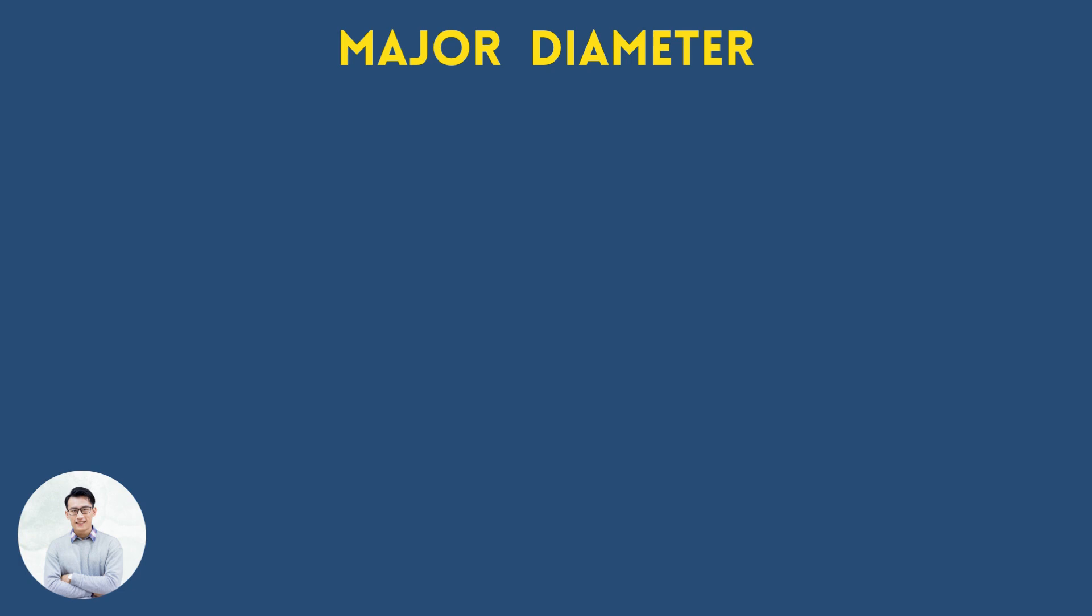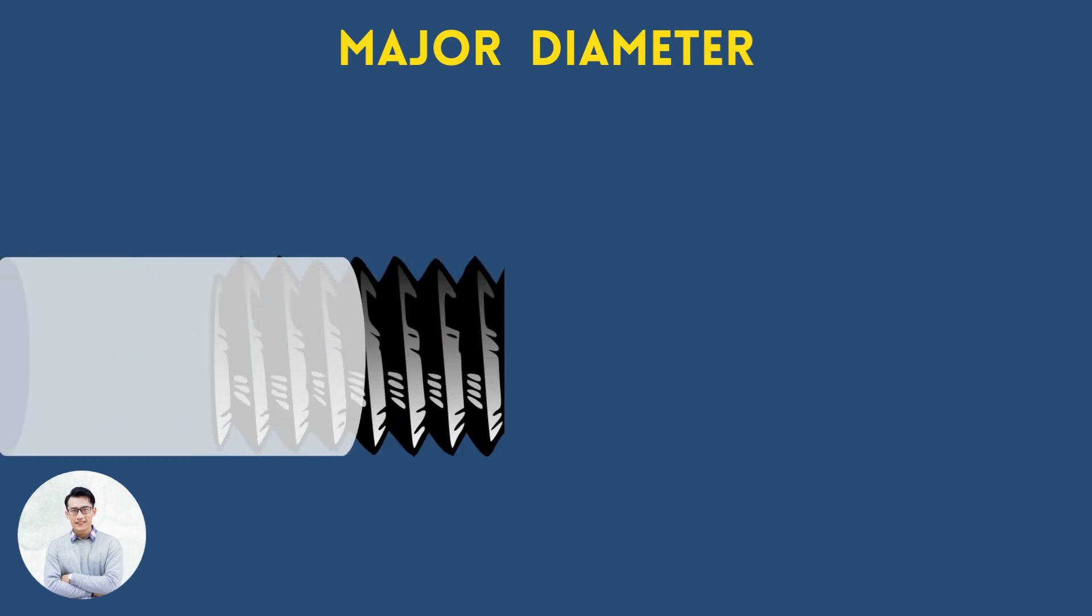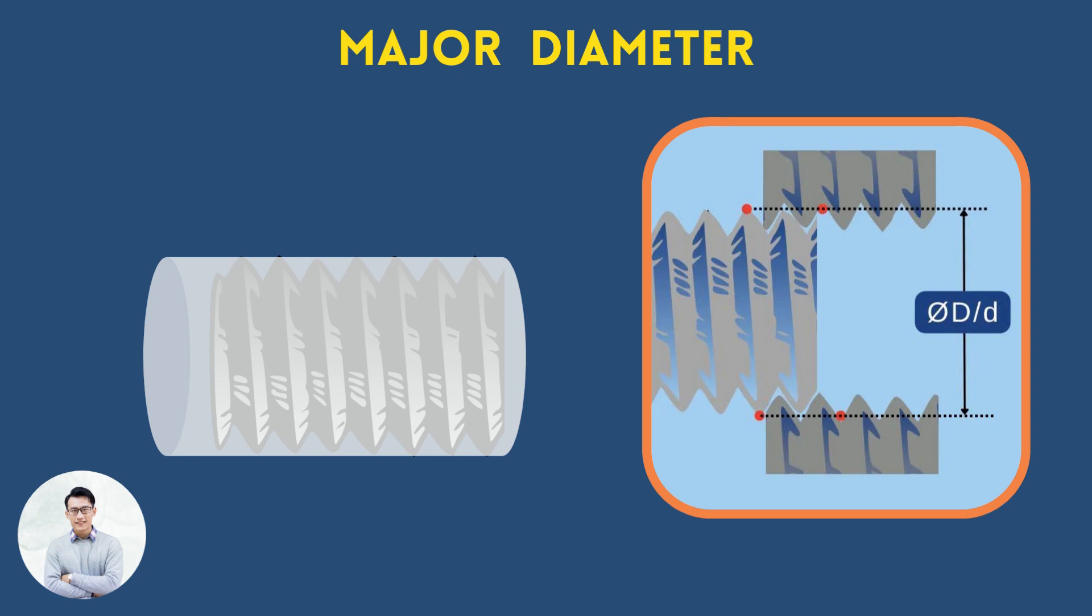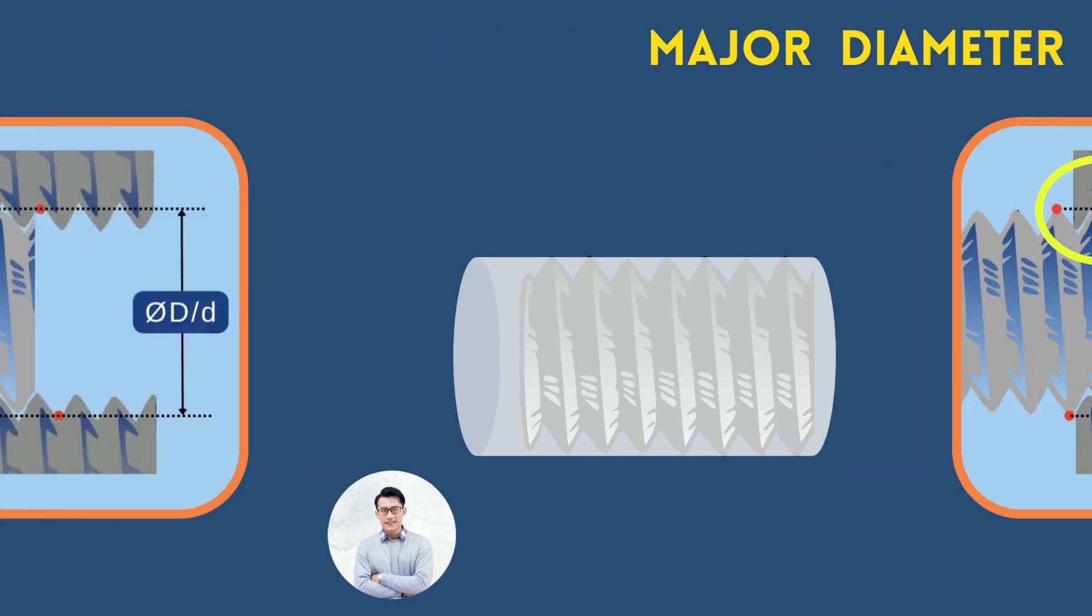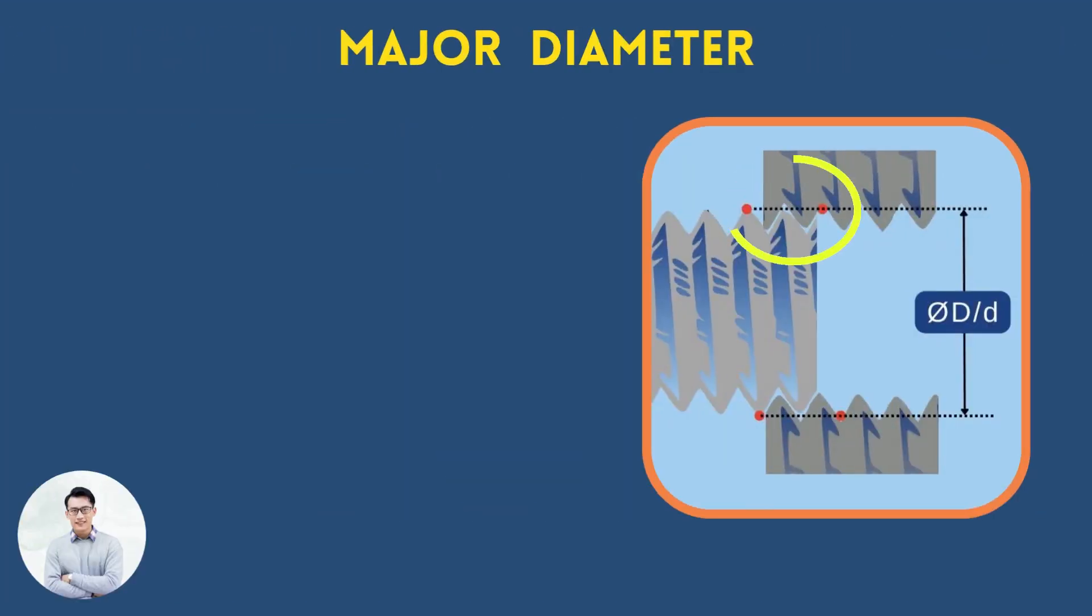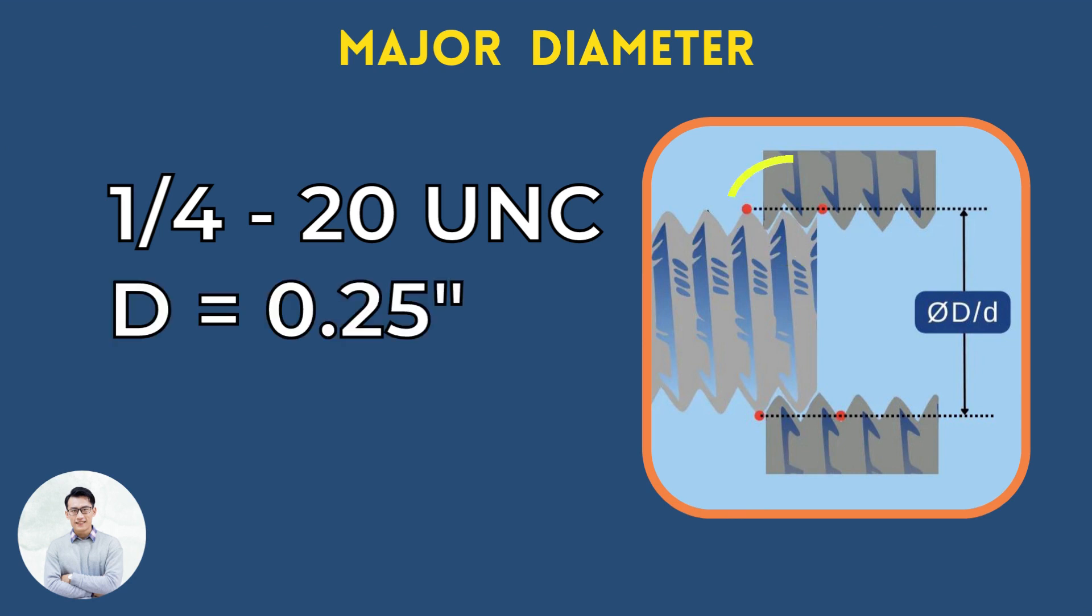Major diameter is the diameter of an imaginary cylinder that touches the largest diameter of a thread. The nominal value of the major diameter equals the nominal thread size. For example, in a UNC quarter-inch thread, the nominal major diameter is a quarter of an inch, 6.35 millimeters.